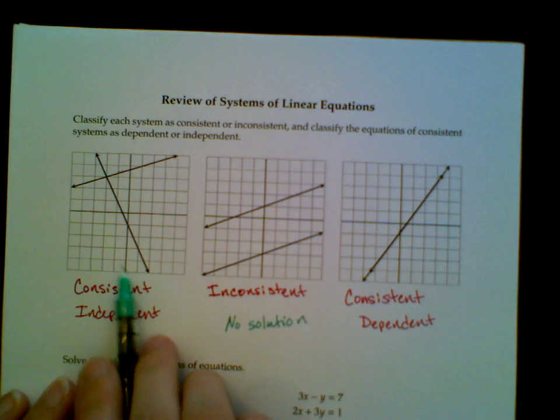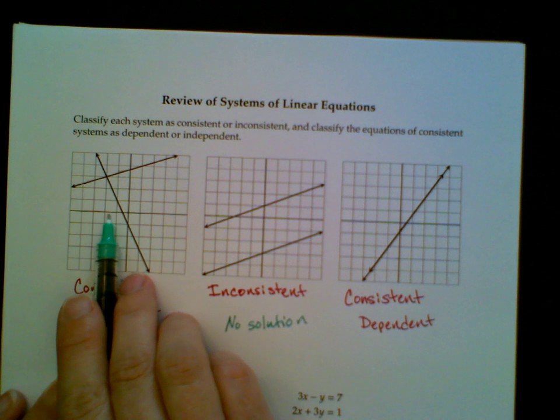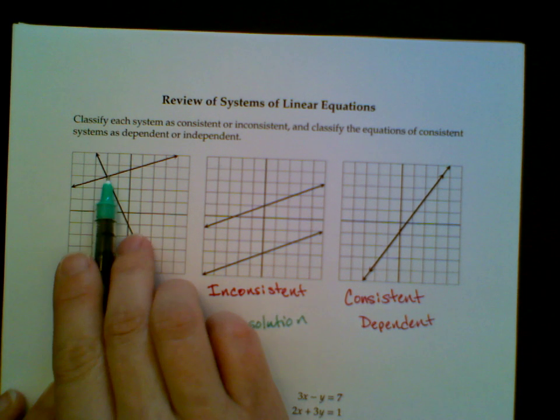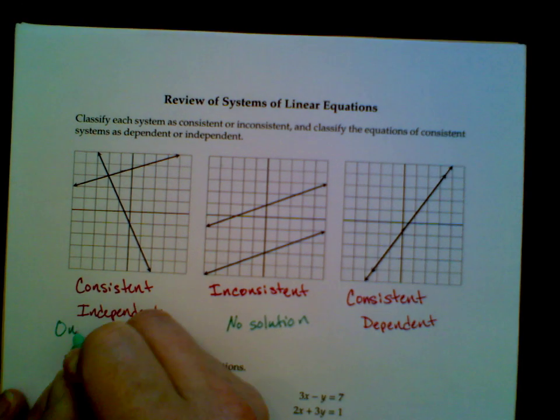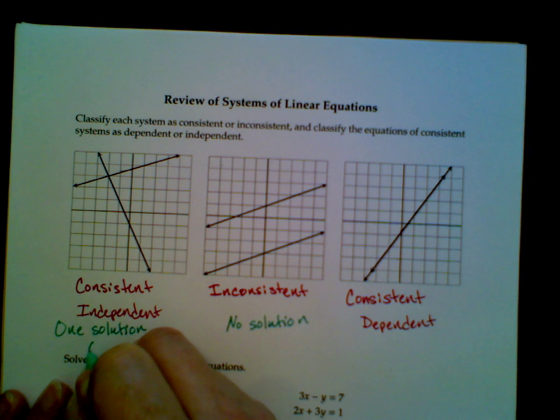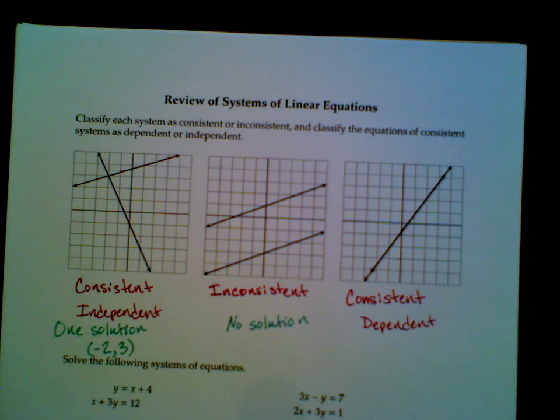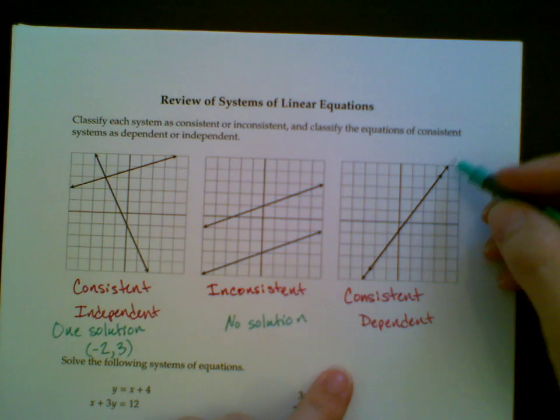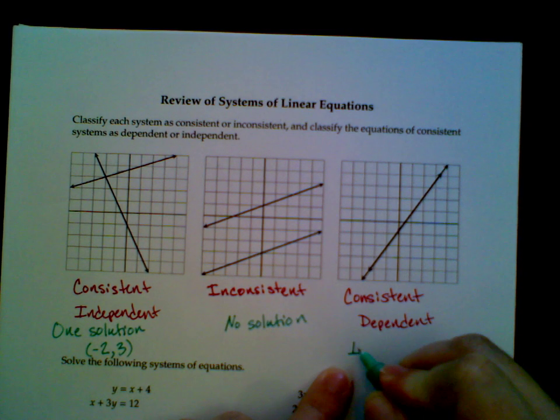This first system intersects at this one point, which is negative 2 comma 3. So it has one solution, and the point negative 2 comma 3. And finally, this system has infinitely many solutions.